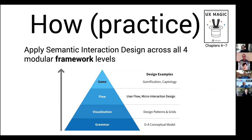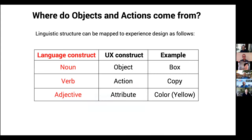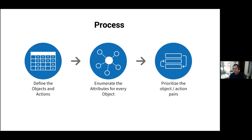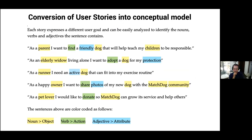In practice, you have to work the grammar through all the different layers. Where do nouns come from? Objects are nouns in natural language; actions are verbs; and any attribute value would be an adjective. Once we've figured out our objects and actions, we need to enumerate all the attributes, and then prioritize because not all object-action pairs are of equal importance. I use a pet rescue nonprofit called Matchdog in the book as a hypothetical case study — the other case studies are real — but I use this one in class.